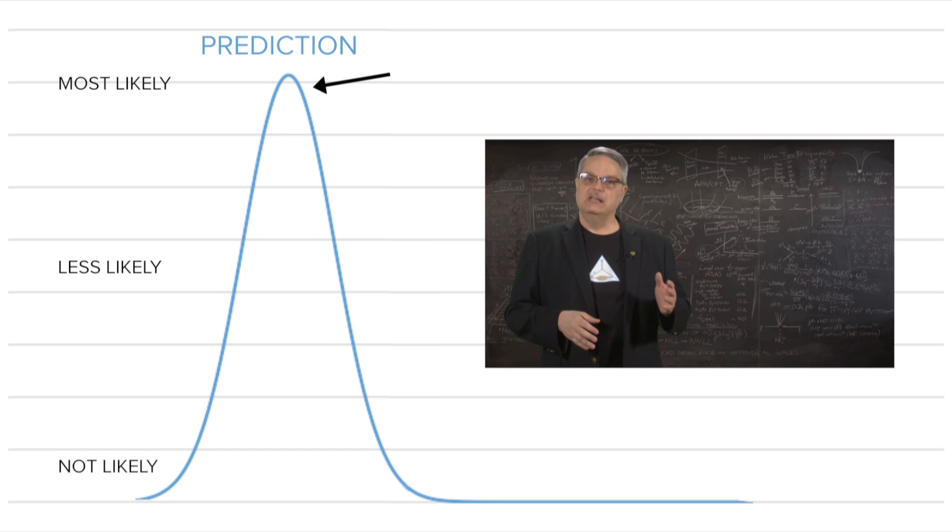Where the curve is highest, this is where it is most likely that you'll find the right predicted answer. Where it drops down a bit is less likely, and when it goes to zero, it's not likely at all.